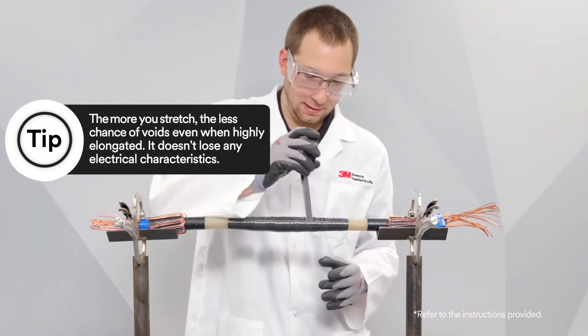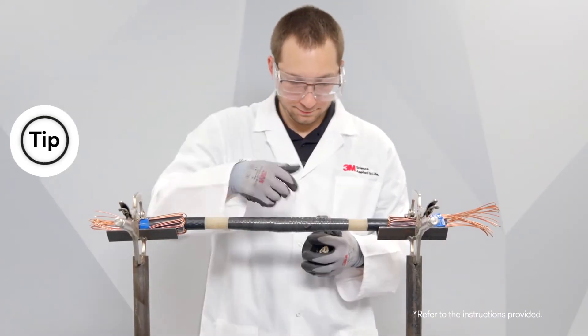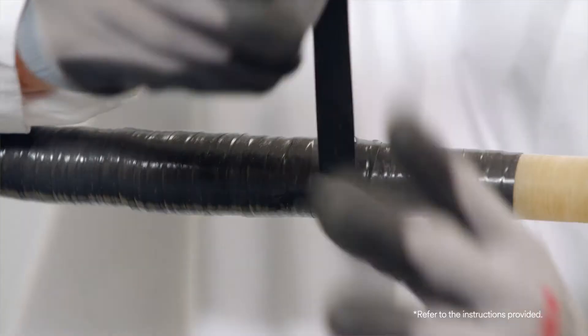If the Scotch Linerless Rubber Splicing Tape 130C breaks while applying, all you need to do is start wrapping again three-quarter of an inch back from the break.